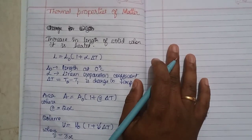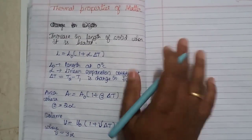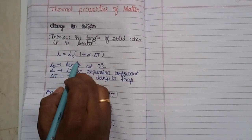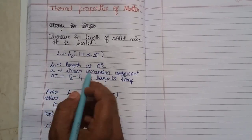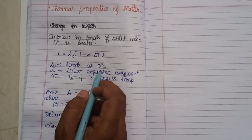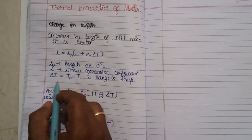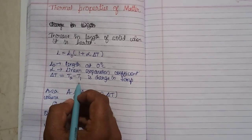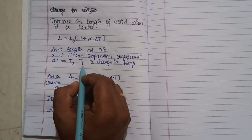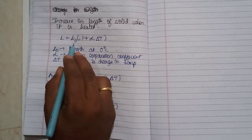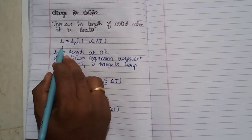Whenever heat is given to a solid, there will be an increase in its length, which is given by L equals L0 into 1 plus alpha into delta T. Here L0 is the length of the solid at 0 degree centigrade, alpha is the linear expansion coefficient, and delta T equals T2 minus T1, the change in temperature. T1 is the initial temperature at which the length is L0, and T2 is the final temperature at which the length is L.